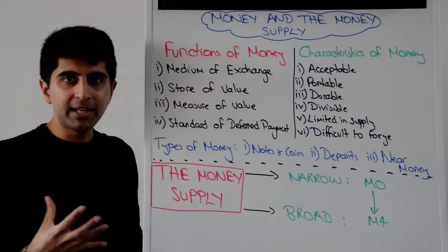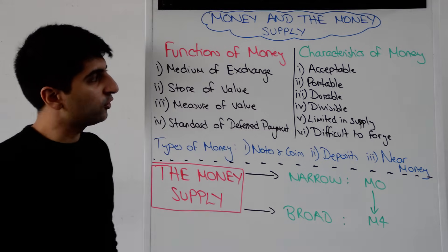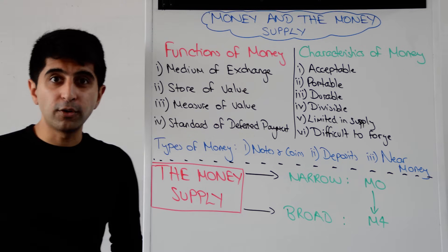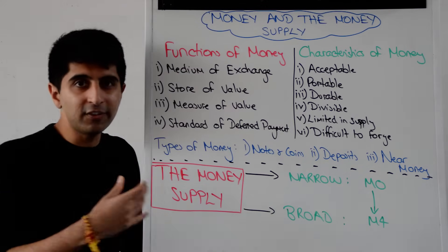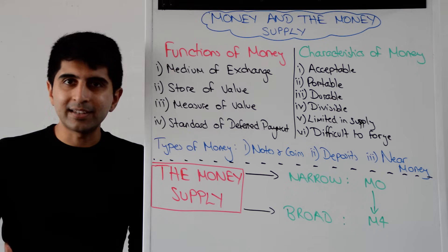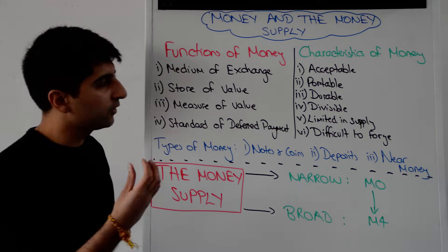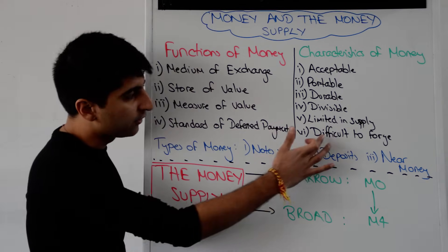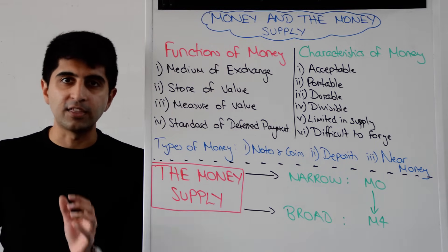What are the characteristics that money has to have? Money must be acceptable — i.e. act as a medium of exchange. It's got to be portable; there's no point in money that's very difficult to carry around. It's got to be durable and divisible, whereby it's easy to break down into different units — for example, pence and pounds in the UK. It's got to be limited in supply so it keeps its worth, and difficult to forge, because if it's easy to counterfeit, people will lose faith in money.